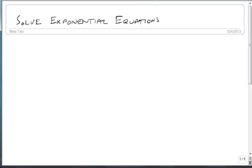We're now going to solve exponential equations. So what happens if we have an equation like the following: 2 to the x plus 1 equals 64.